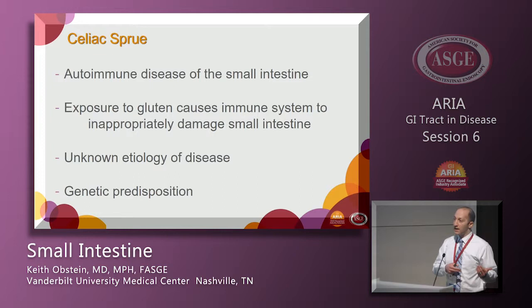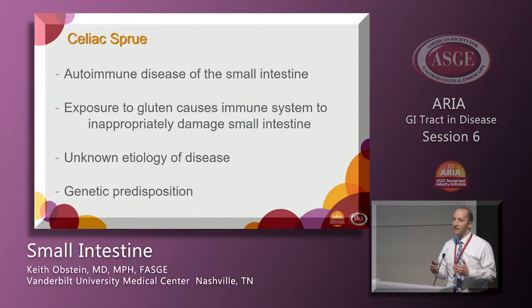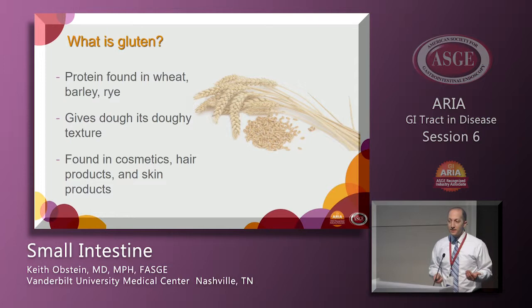There is a genetic predisposition involving HLA haplotypes — DQ2 or DQ8. About 25 to 30 percent of the population carries those haplotypes, but only about 3% of those individuals actually develop celiac disease. So it's probably a combination of genetic susceptibility and an environmental dietary insult.